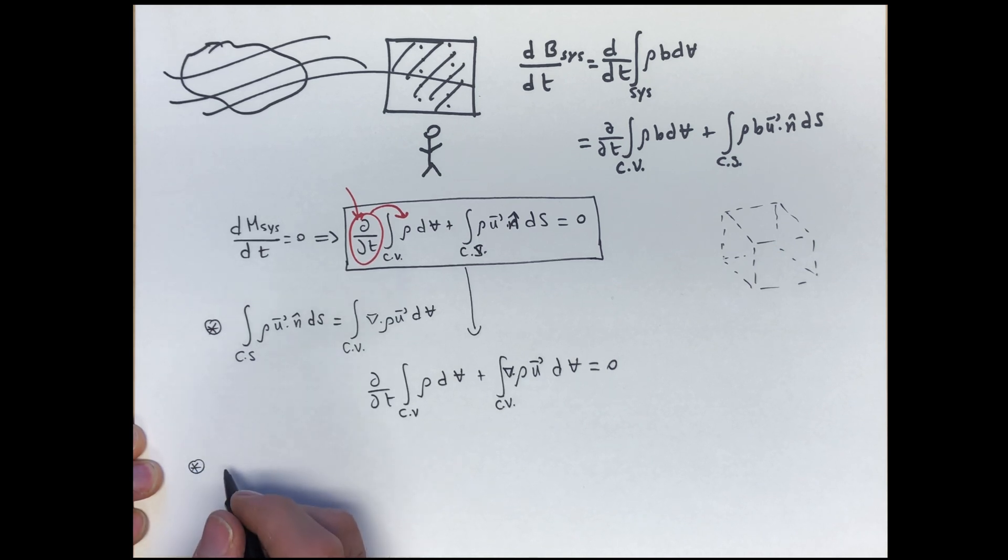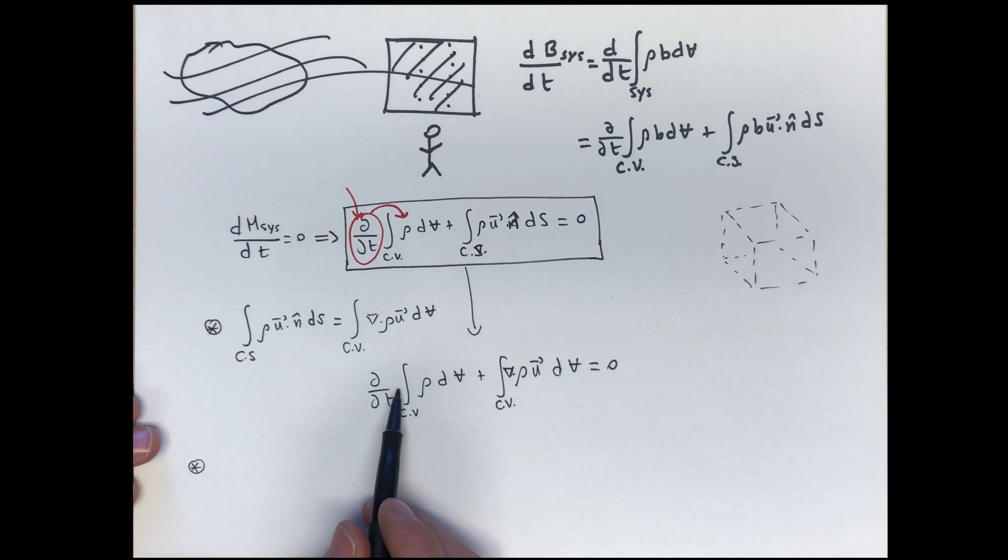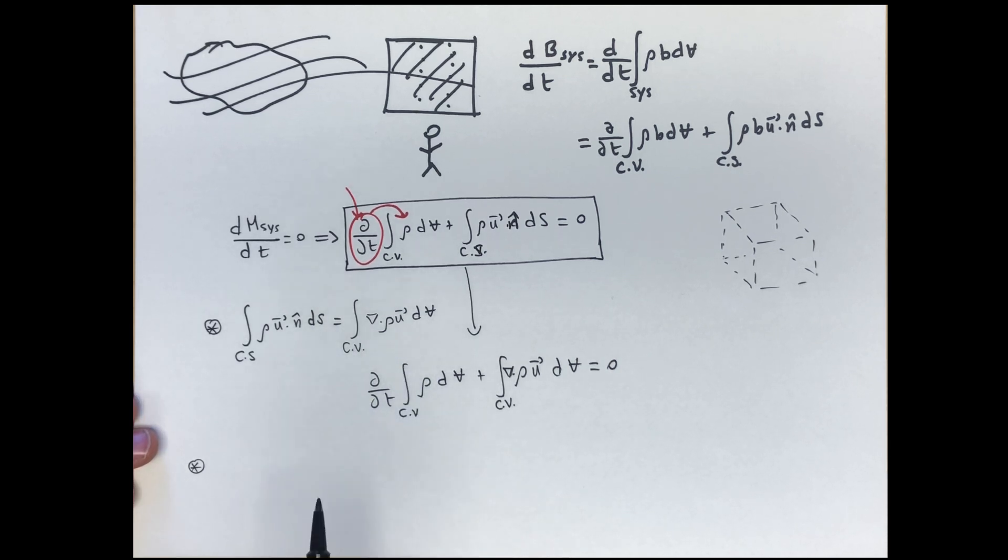Here's what we're going to assume. Since we've assumed that the control volume is fixed in space and time, it's non-deformable, so it's not changing with time. The shape of the control volume is not changing with time. Even if it was, we would have to do something a little bit different for that case. But in this case, the easiest assumption to do is to say that the control volume is fixed in space and time. Then this partial derivative over the control volume can go in because the integral is not changing in time.